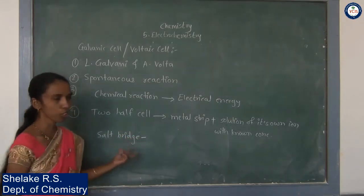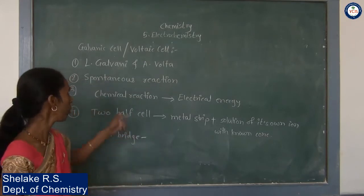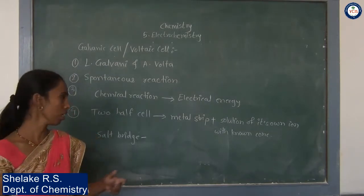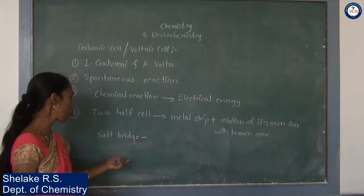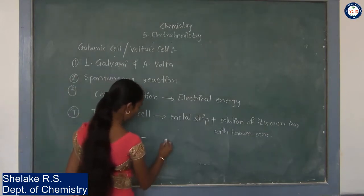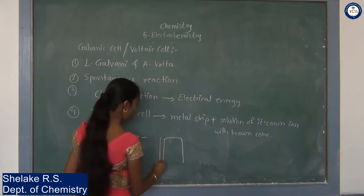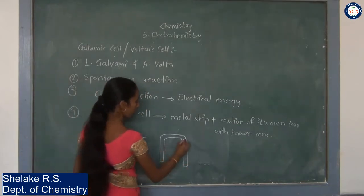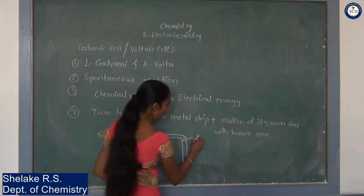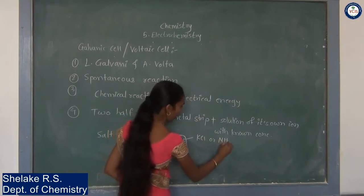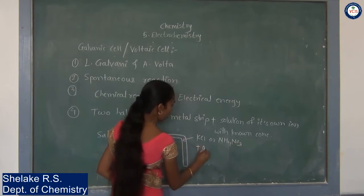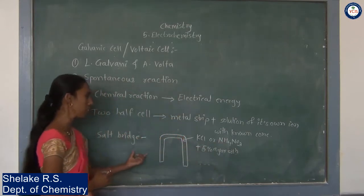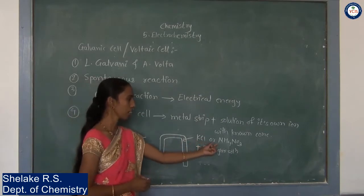The two half-cells are connected with each other using a salt bridge to form the galvanic cell. The salt bridge is nothing but a U-shaped glass tube. This U-tube contains a concentrated solution of KCl or ammonium nitrate plus a 5% agar solution.